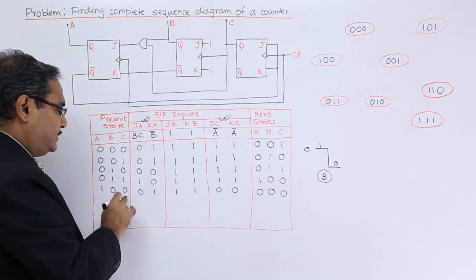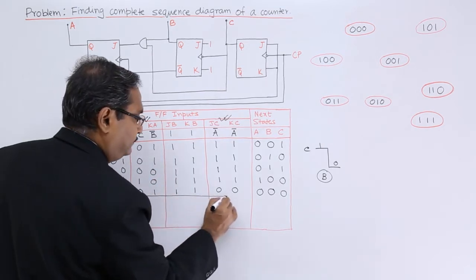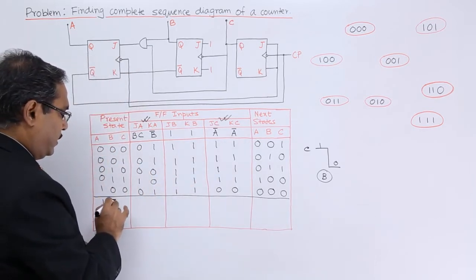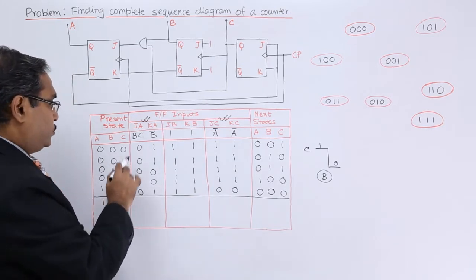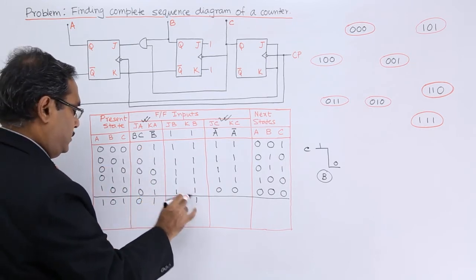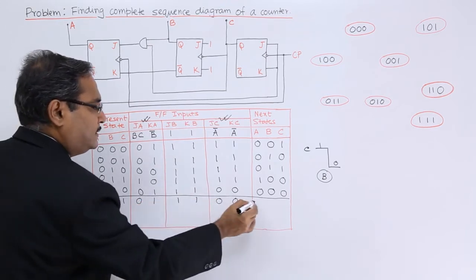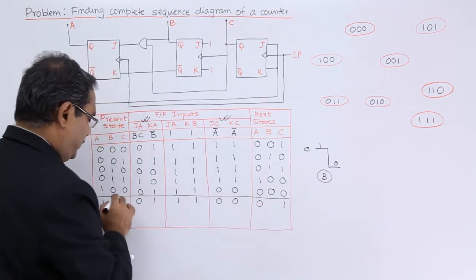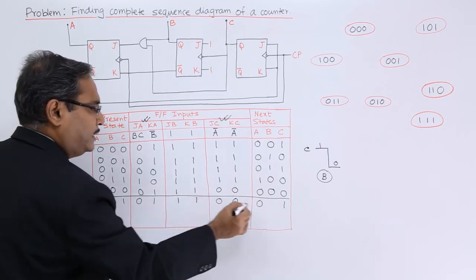State 0,0,0 has already been considered, so let me address untouched states. For state 1,0,1: BC is 0, B-bar is 1, and A-bar is 0,0. For 0,1 the output is 0. Here 0,0 means no change, and C has no transition so B did not get any clock pulse and B will remain the same.